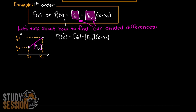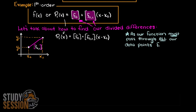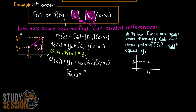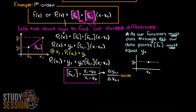The divided difference of f0 will simply be y0, as with only one point, our polynomial must pass through every point, therefore it can only logically be y0. At x1, we know that our Newton polynomial will have to be y1, as it must pass through all of the points. Therefore, we can rearrange for this coefficient that we wish to solve for, and we just found the divided difference coefficient for a first order Newton's polynomial.